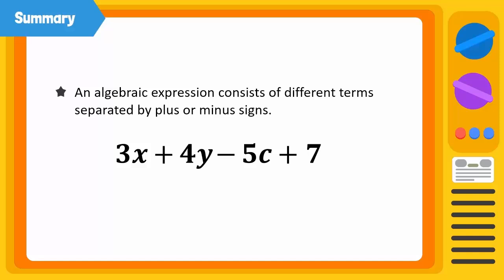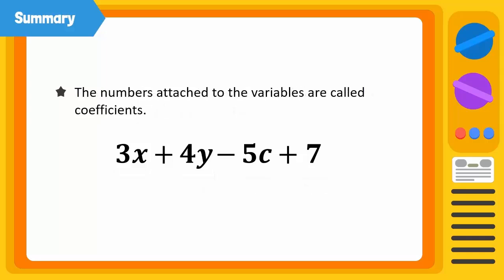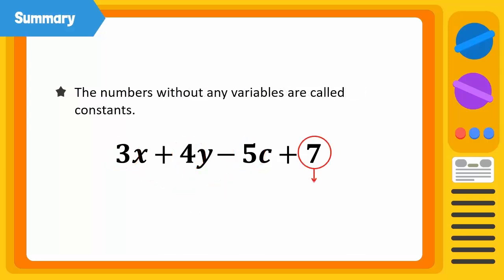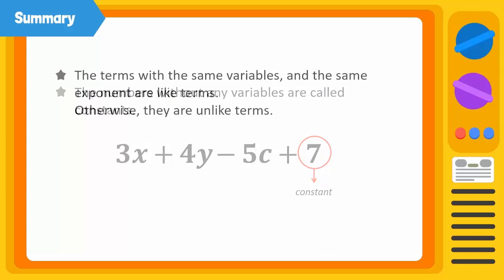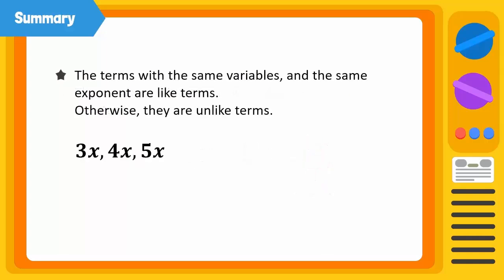Today, we learned that an algebraic expression consists of different terms separated by plus or minus signs. The numbers attached to the variables are called coefficients. The numbers without any variables are called constants. The terms with the same variables and the same exponent are like terms; otherwise, they are unlike terms.